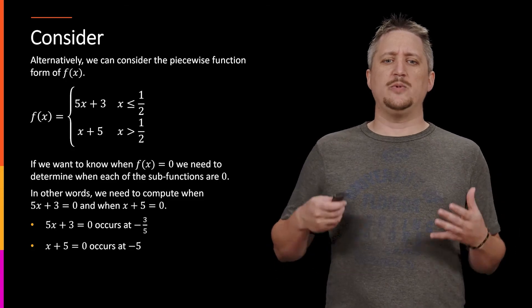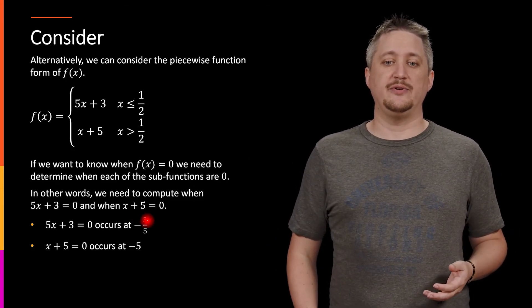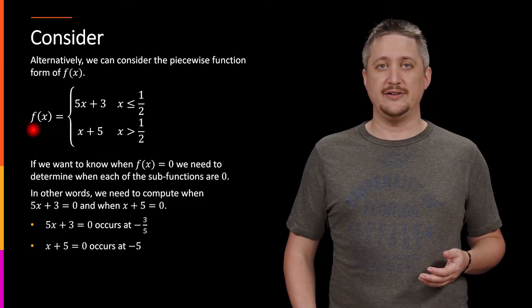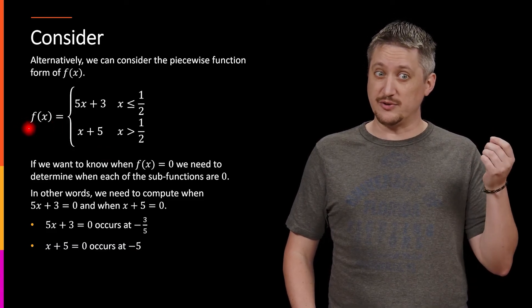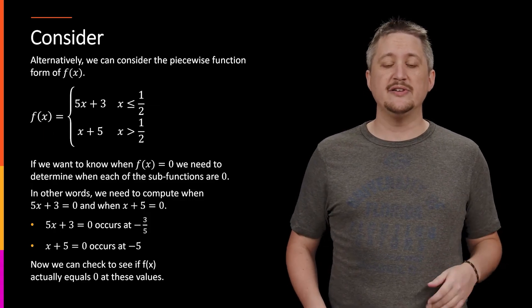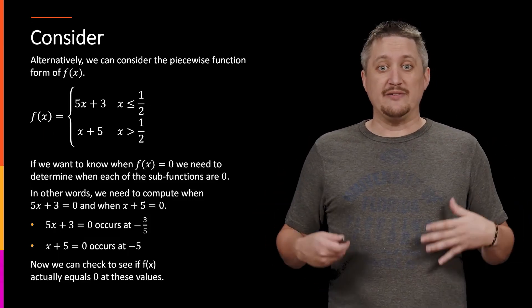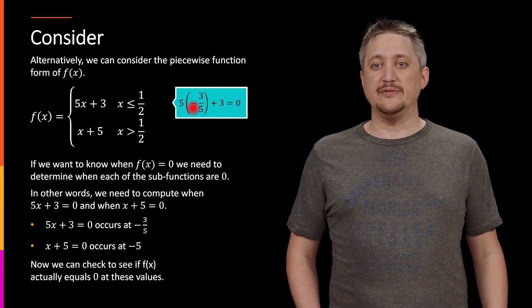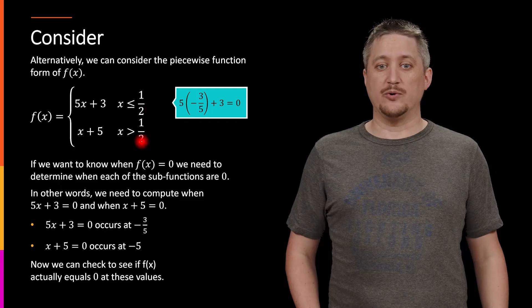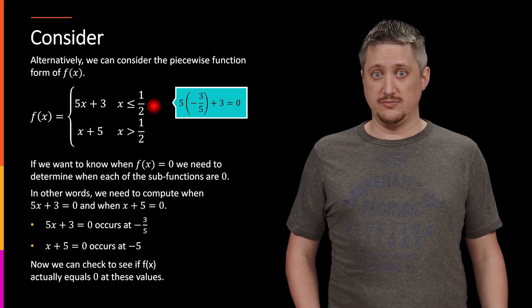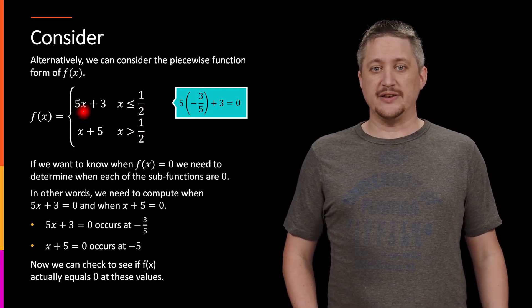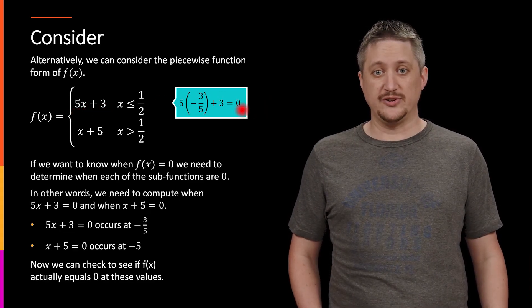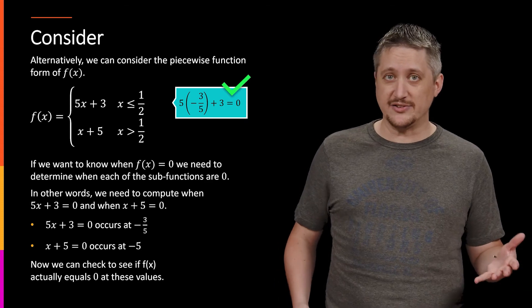But now we would check that. So we'd take those values, like -3/5 and -5, and plug them into f(x). And remembering the piecewise function, when we plug in, say, -3/5, that means that we have to check where it actually lands. So if we are plugging in -3/5, we go, is it less than or equal to 1/2 or greater than 1/2? It's less than 1/2. And so then we would plug it into this function. So if we did 5 times -3/5 plus 3, that equals zero. That means that that is indeed a solution.